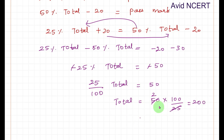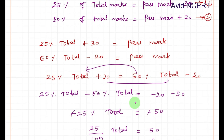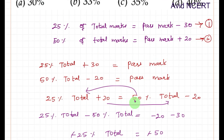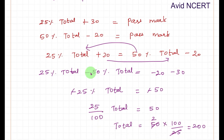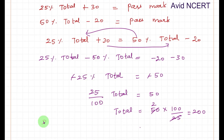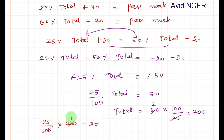Now substitute total marks into the first equation to get the pass mark. Pass mark equals 25/100 times 200 plus 30. That is 25 times 2 equals 50, and 50 plus 30 equals 80. So the pass mark is 80.